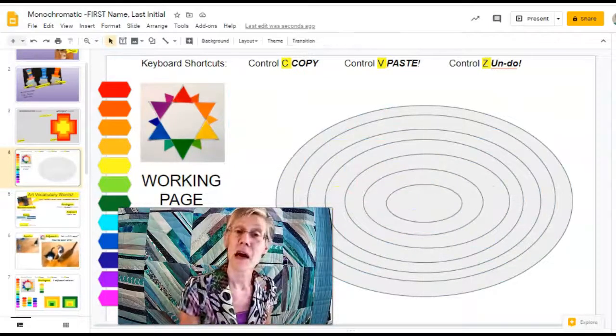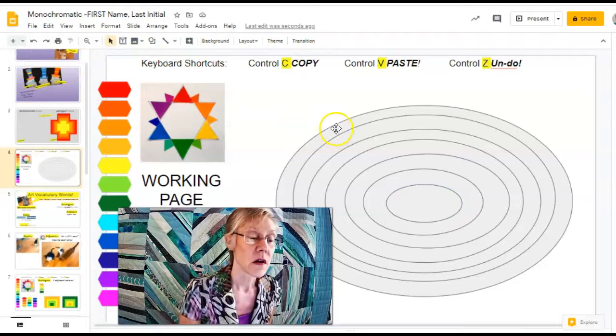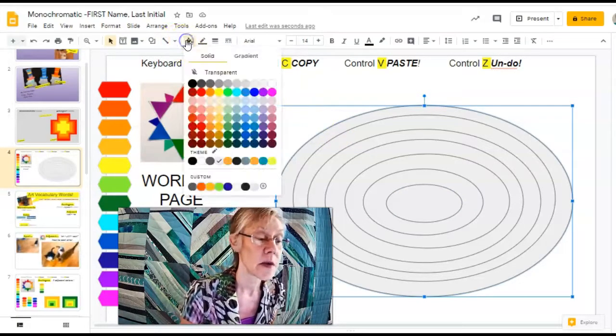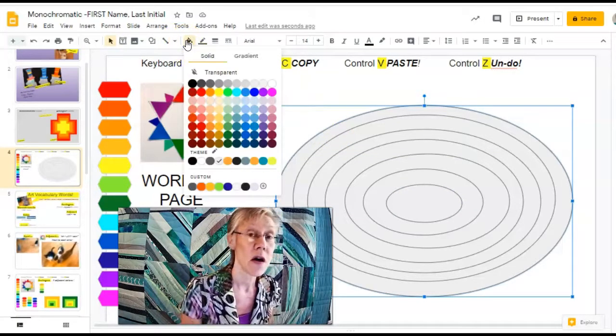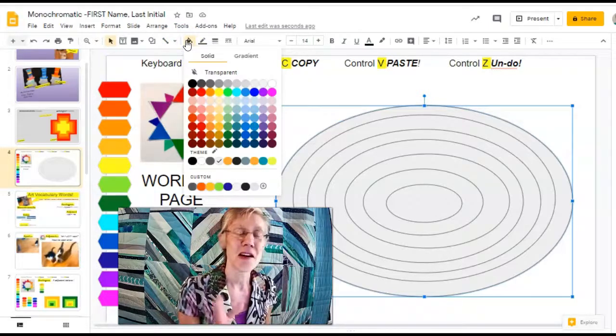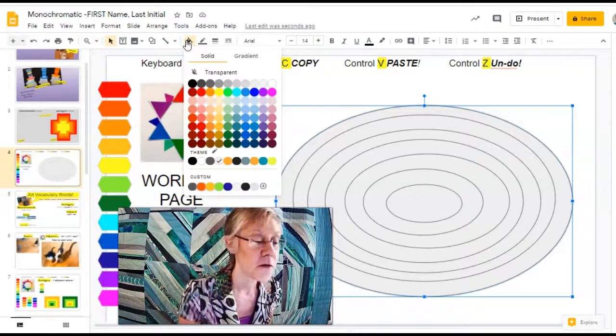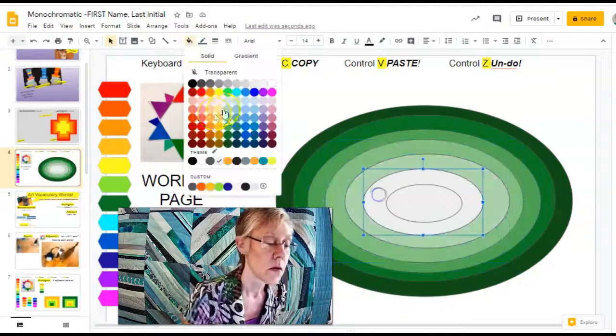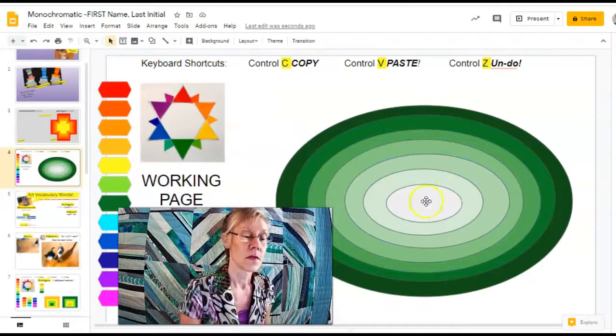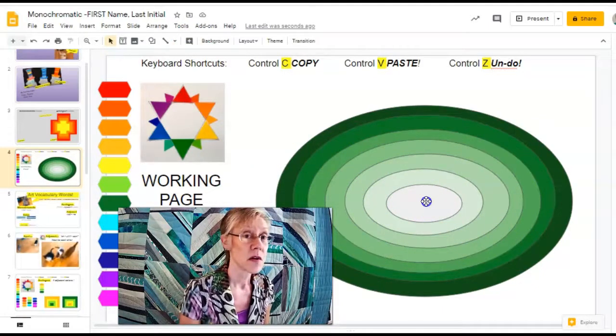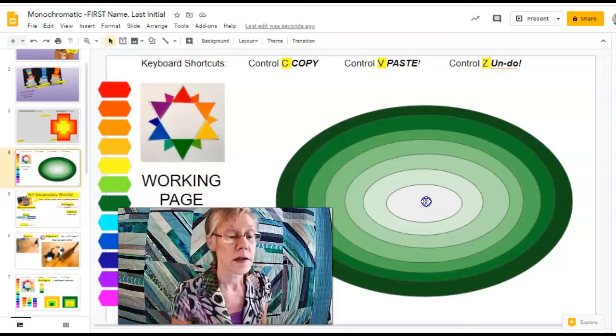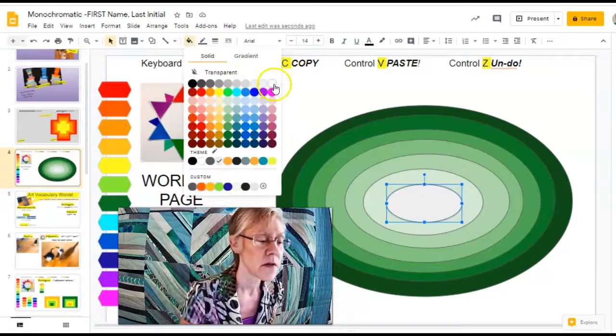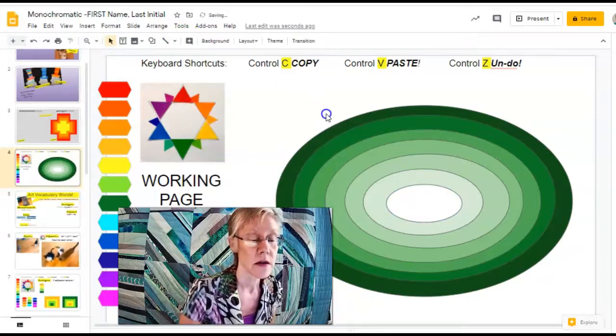Now I've got my seven shapes. I click on one shape and that makes my paint bucket show up. And look, all the monochromatic color schemes are there for you to choose. The last shape, you may leave it white or make it white. I like to also get rid of all the lines.